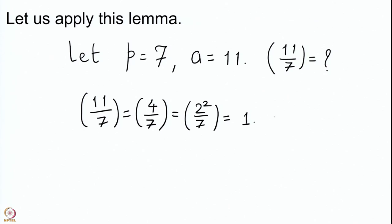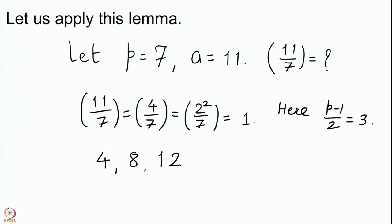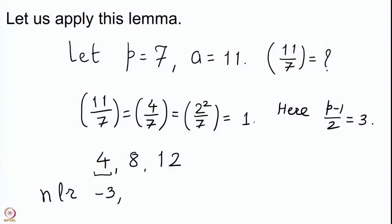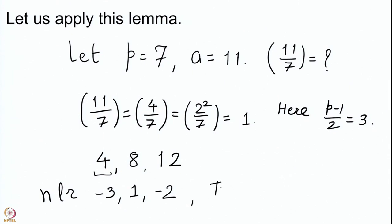With p equal to 7, (p-1)/2 is 3. So we take the first 3 multiples of 4: they are 4, 8, and 12, and then we take their numerically least residues. Since 4 is bigger than 7/2, its numerically least residue is -3. 8 is 1 modulo 7, so its numerically least residue is 1. 12 is 5 modulo 7, and since 5 is bigger than 7/2, we take -2. So the numerically least residues are -3, 1, -2, and 2 of these are negative.